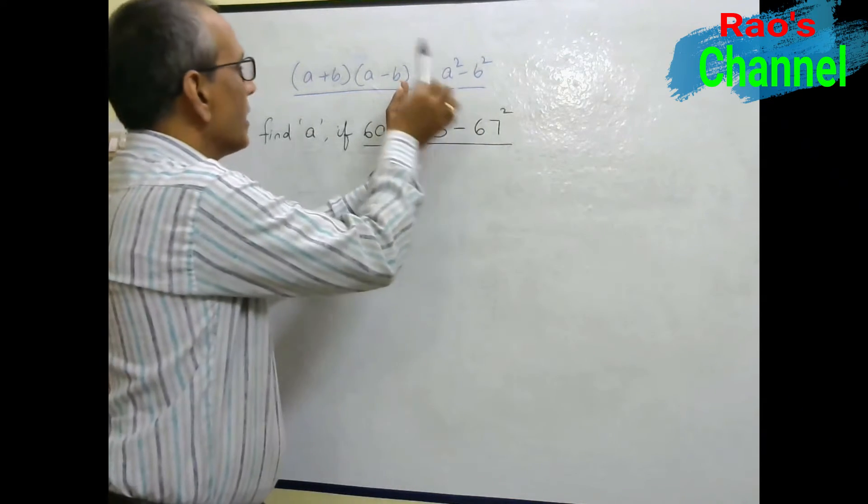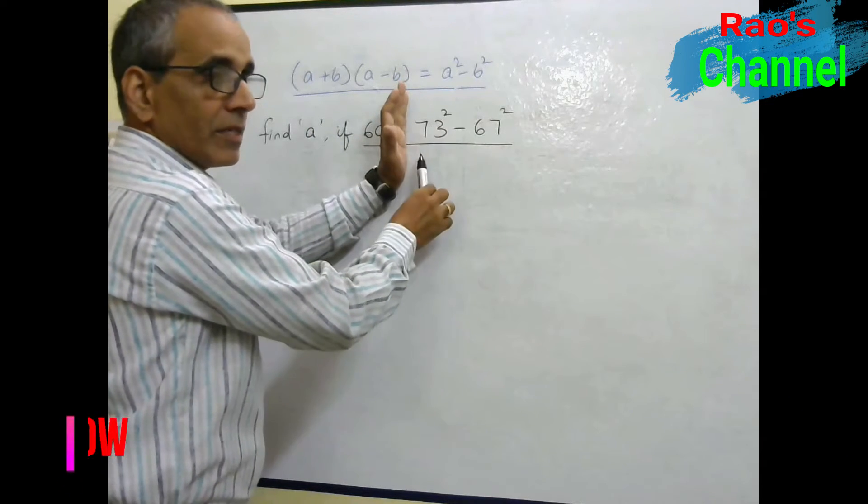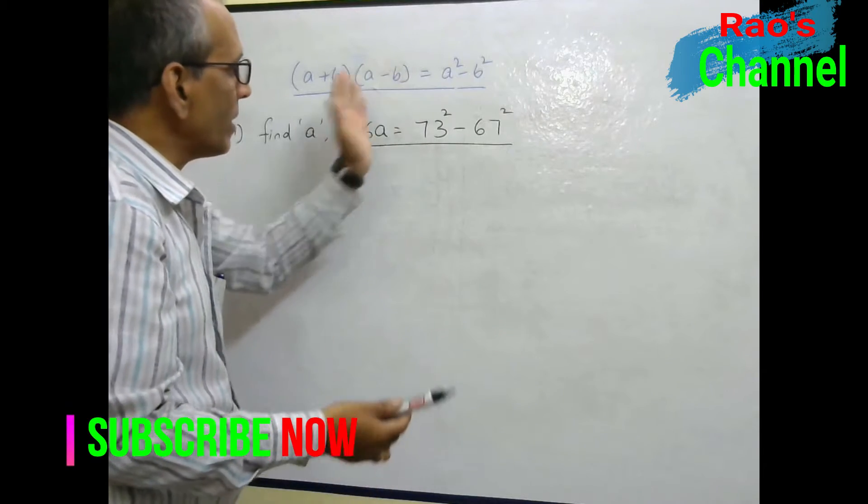So its meaning is A plus B of A minus B, and its meaning is 73 plus 67 and 73 minus 67. It is same as the identity.